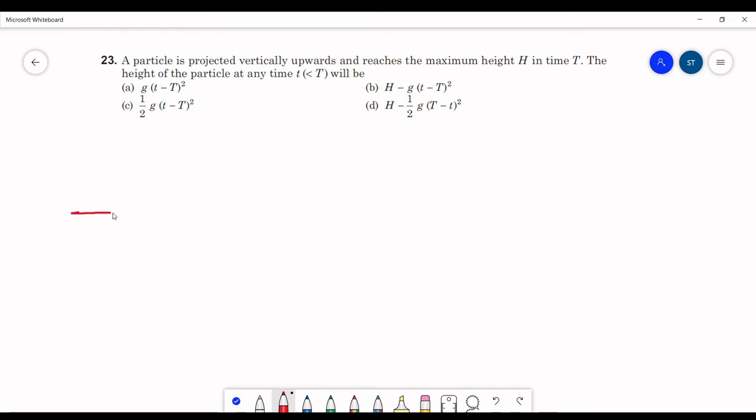Let us assume the initial velocity is u. At t equals capital T, it is reaching its maximum height h. At some other time t equals small t, let us assume the particle is here.